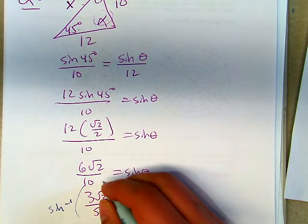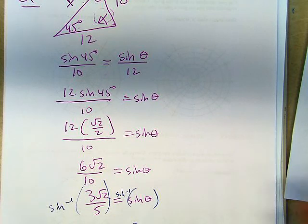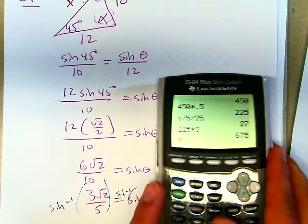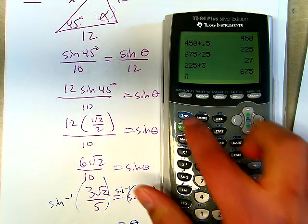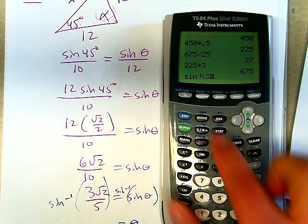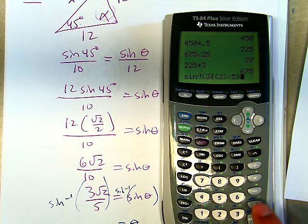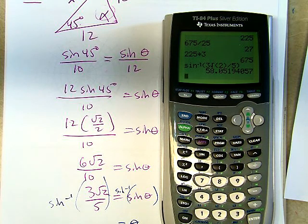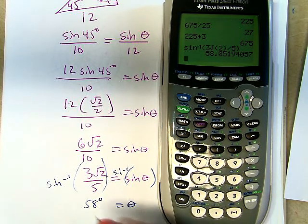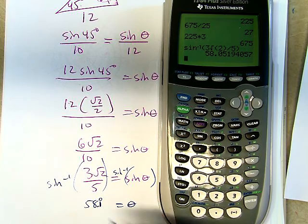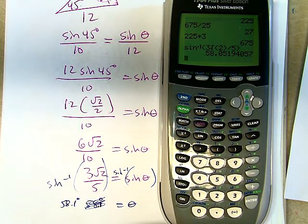But the problem with this is that I need to find inverse sine now to get theta. So let's do that. Inverse sine of the left side, inverse sine of the right side. So then we get theta is, now we're going to use our calculators. Make sure we're in degree mode. That's good. So then we do inverse sine of 3 root 2 divided by 5. We get 58 degrees. Let's say 58.1. Let me rewrite that. 58.1 degrees, approximately.